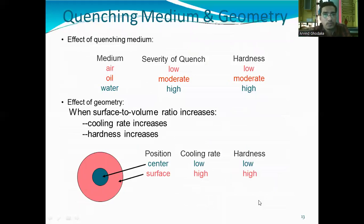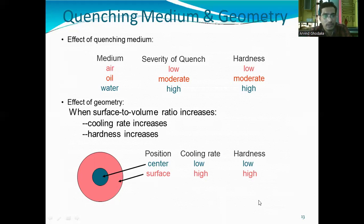The effect of quenching media: if the media is air, the severity of quenching is low and hardness is low; if oil, severity is moderate and hardness is moderate; if water, severity is high and hardness is also high. Regarding the effect of geometry: when the surface-to-volume ratio increases, cooling rate increases and hardness also increases. Regarding position: at the center of a component the cooling rate is low so hardness is low, whereas at the surface the cooling rate is high and therefore hardness is also high.